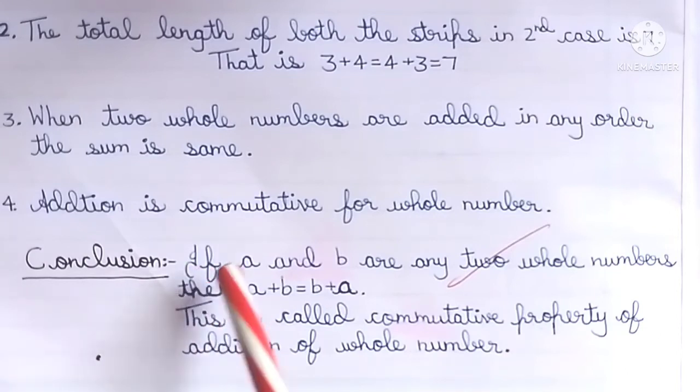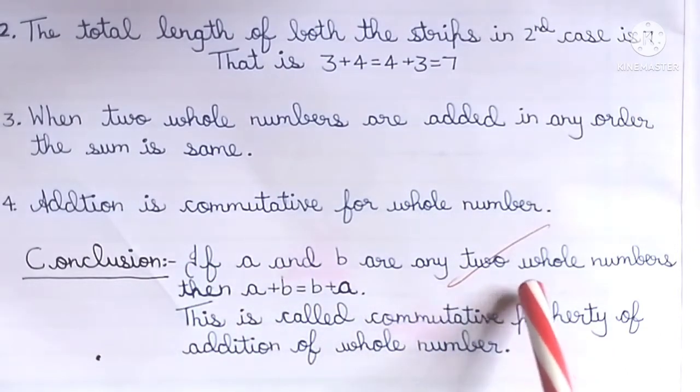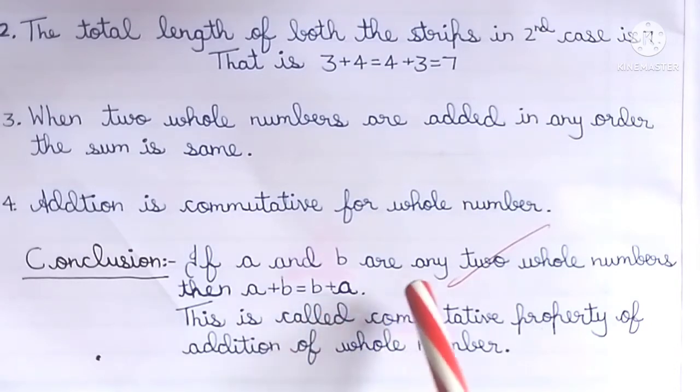Conclusion: If A and B are any two whole numbers, then A plus B equals B plus A. This is called commutative property of addition of whole numbers.